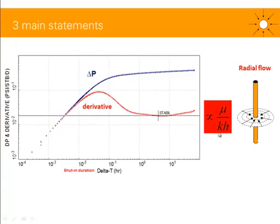The level of this stabilization is going to be inversely proportional to your mobility, KH over mu — K being the permeability in the horizontal plane, H your net reservoir thickness, and mu the fluid viscosity. So if I have a lower stabilization, I will have a higher KH. If I have a higher stabilization, I've got a lower KH.